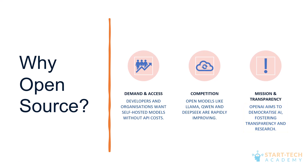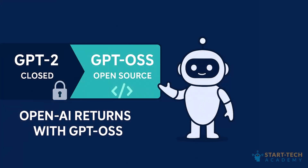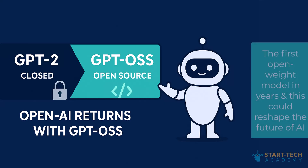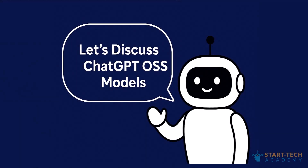These are the major reasons why OpenAI — the company that went closed after GPT-2 — has returned with GPT-OSS, the first open-weight model in years, and this could reshape the future of AI. Let's discuss what the GPT-OSS models are and how you can use them.